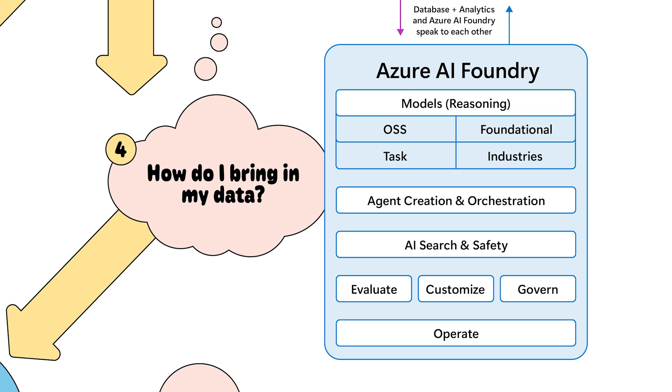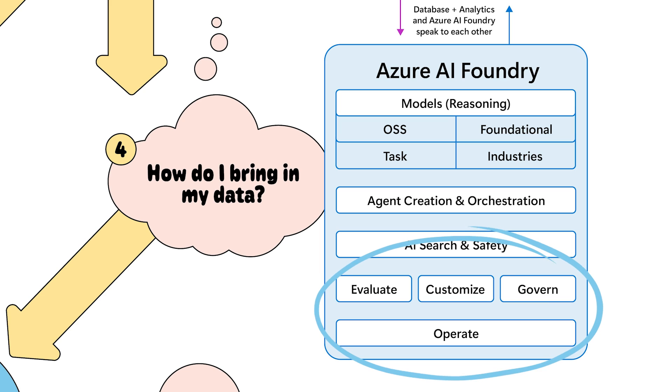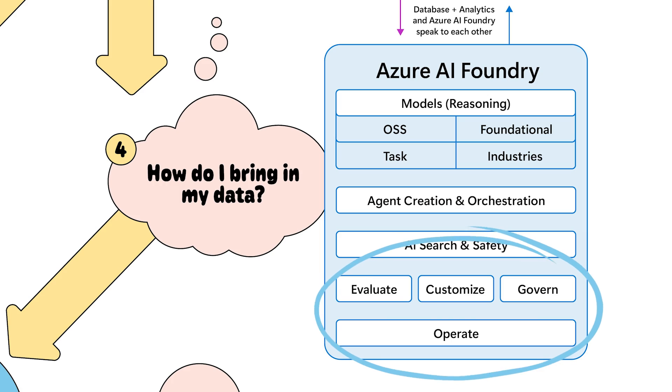The agent will have a hook into the model you selected. From there, you also need to think about safety — there are lots of AI safety features within Azure AI Foundry. Then you'd evaluate, customize, and operate. I put all of those in the same bucket: how do you productionize your model or application? Anything you put in production requires those four things. So Azure AI Foundry is that one-stop shop for model choices, agent frameworks, agent orchestration, and operating your application.